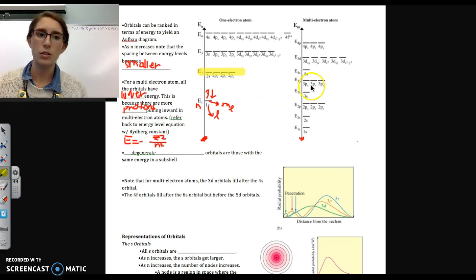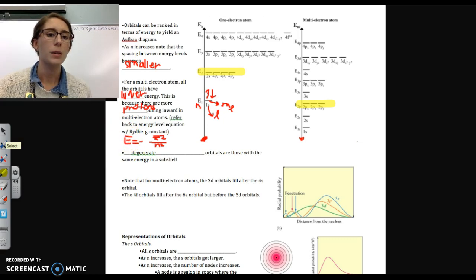For a multi-electron atom, which is usually what we're looking at when we start talking about electron configurations, the 2S has a lower energy than the 2Ps. But all 2Ps are degenerate, for our purposes at least, so they all have the same energy. And that gets important when we start talking about the order in which orbitals fill.